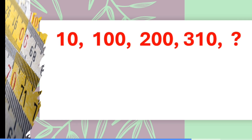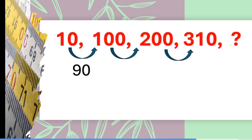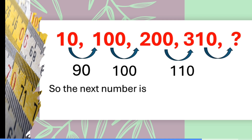Here: 10, 100, 200, 310. Let's find the difference. The difference between 10 and 100 is 90, then 100 and 110 — wait, the difference is increasing by 10. So the next difference must be 120, and the next term is 310 plus 120, which equals 430.